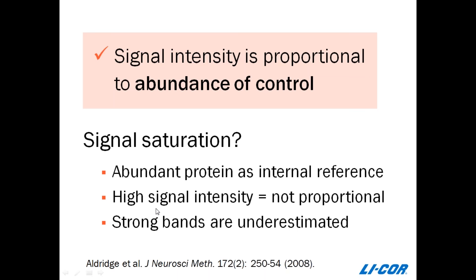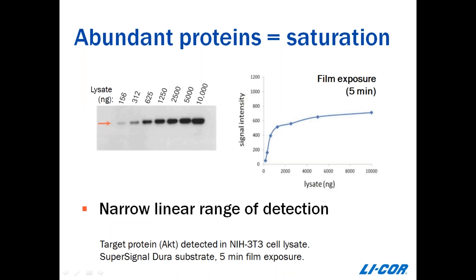When you use a single reference point, your data are more sensitive to the biological variability that comes from experimental treatments, disease, cell type, and other factors. And that variability will increase the mean CV of the normalized data. The problem is that high CVs may cause false negatives — small and genuine changes in your target protein that are overlooked by your data analysis.